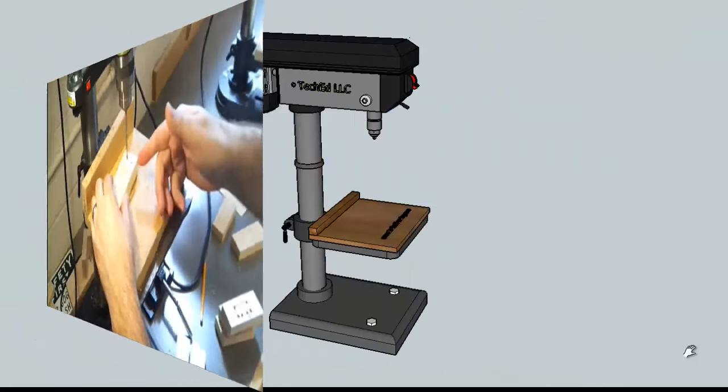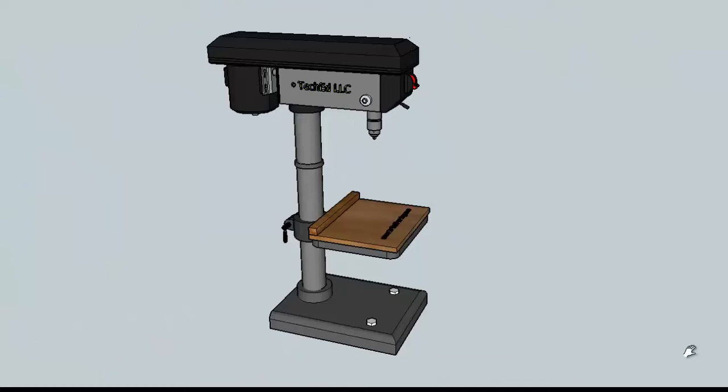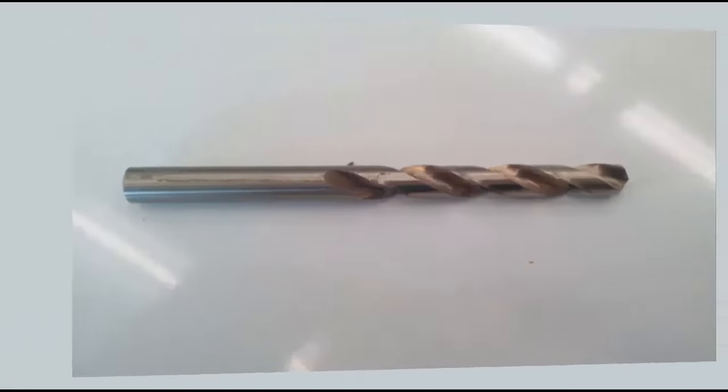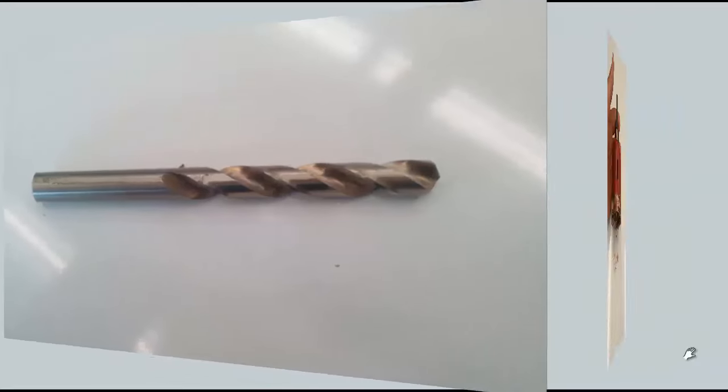Some of the most common bits that are used with a drill press would be the Forstner bit, twist bit, and a hole saw.